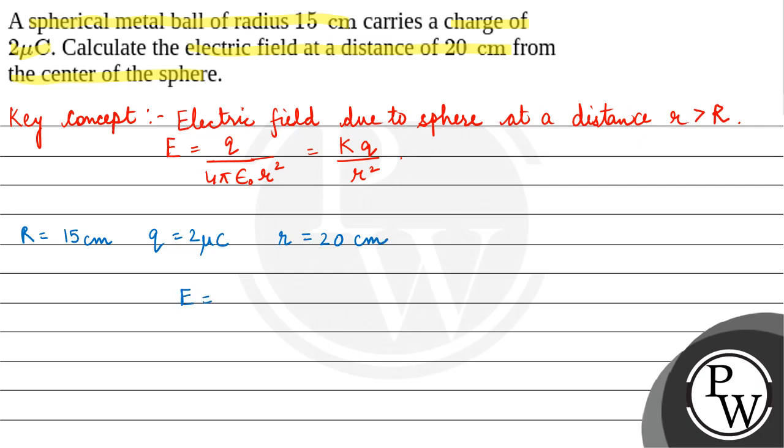The electric field would be E equals kQ upon r². k's value is 9 × 10⁹, Q is 2 × 10⁻⁶, and r which is 20 cm means 0.2 meters, so 0.2 squared.